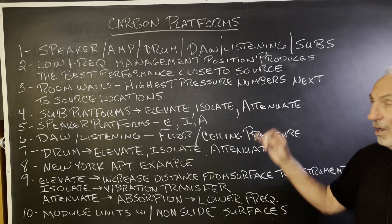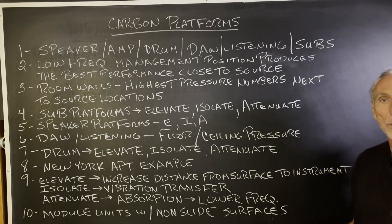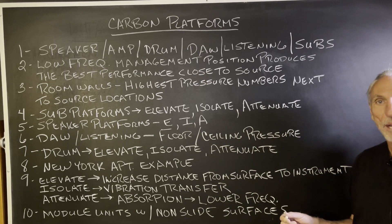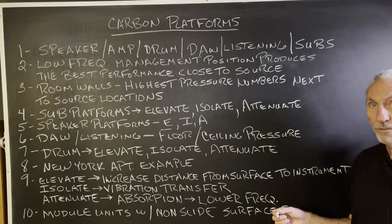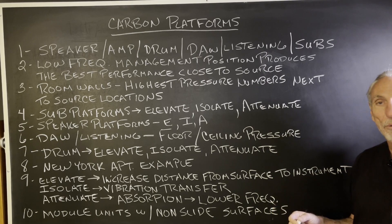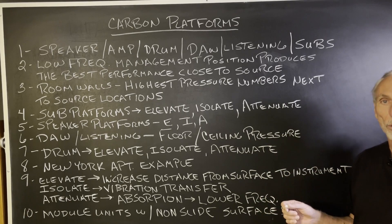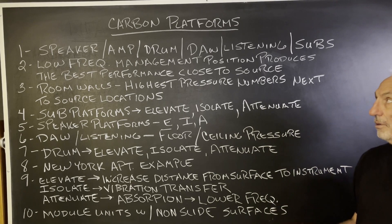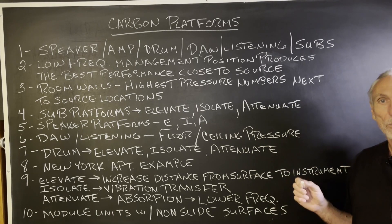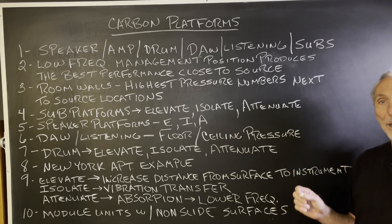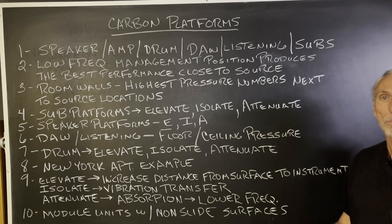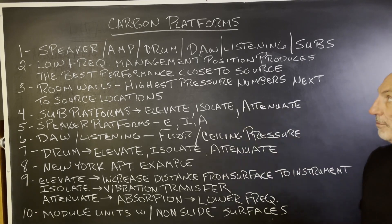Modular units — all of our platforms are modular. So for a DAW, you can start with an 8x8 platform. If you want a little more surface area coverage for more performance, you can add more modules. Everything is designed to deal with pressure, and that's the main goal of all the platforms — isolate, attenuate, and elevate to reduce pressure.